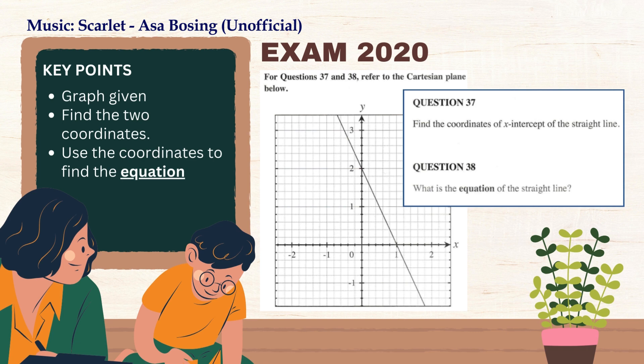The first point is the provision of the graph. Please take note that there are some exam questions where graph is not provided, and students are tasked to find the intercepts using other methods. The second point is, two points from question 37 helps or leads to answering question 38. And finally, the third point is to use the two-point gradient formula to find the equation of the straight line. Now take a moment to look through the two questions.